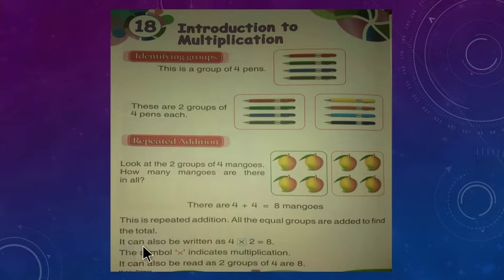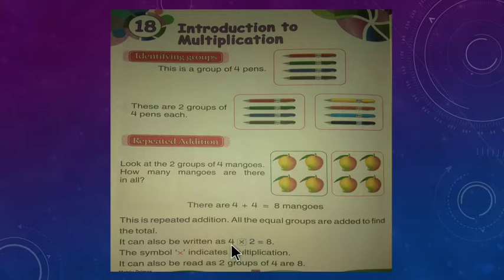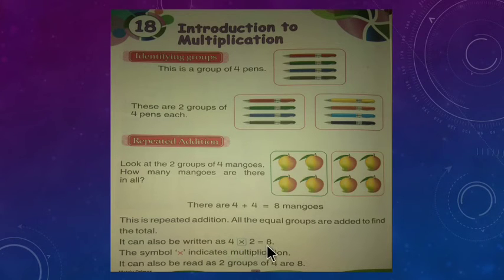It can also be written as four into two. Ab hum isko multiplication mein bhi likh sakte hain. Because these are two groups, and one group has four mangoes. So four multiply two. Four mangoes multiplied by two groups equals eight. Four ones are four, four twos are eight. So we get the answer: eight.